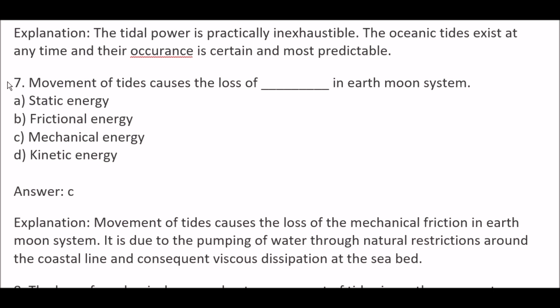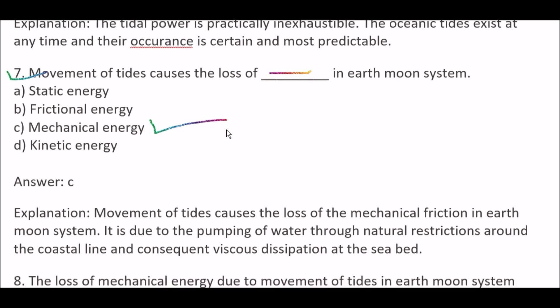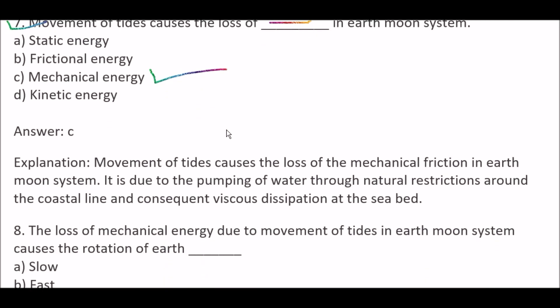Next question: Movement of tides causes the loss of blank in the Earth-Moon system — Option A, static energy; Option B, frictional energy; Option C, mechanical energy; Option D, kinetic energy. Right answer is Option C, mechanical energy. Movement of tides causes the loss of mechanical energy due to friction in the Earth-Moon system, from pumping water through natural restrictions around coastlines and viscous dissipation at the seabed.